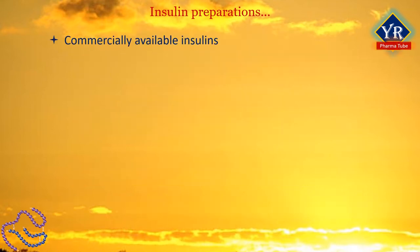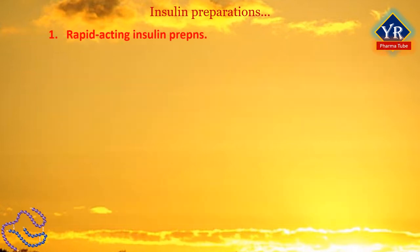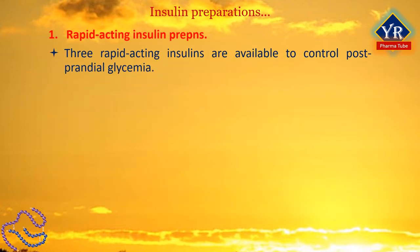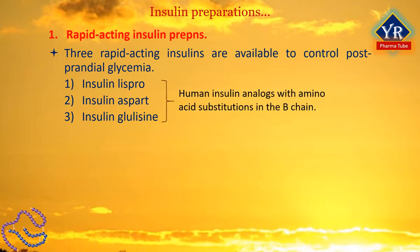Commercially available insulins differ in their onset of action, maximal activity and the duration of action. The table given here illustrates the different activities of insulins. Three rapid acting insulins are now available to control post-prandial glycemia: insulin lispro, insulin aspart and insulin glulisine, which are human insulin analogues with amino acid substitutions in the B chain.